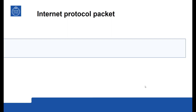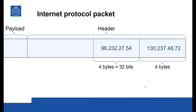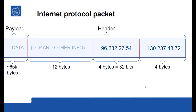Data is carried in packets across the internet, and we need to be reminded of the structure of an internet packet. It's a string of bits which starts with a header, followed by the payload. The header contains the two addresses — the sender's address starting with 96, and the receiver's address starting with 130. In version 4 of the internet protocol, addresses are 32 bits long, or 4 bytes. Version 6 uses 128-bit addresses. The header also contains 12 bytes of other control information, including an indication to forward the contents to TCP on the receiving side. The payload can be up to 65,000 bytes of data.